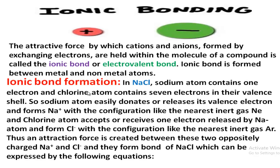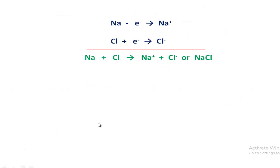Now follow the ionic bond formation. For example, in sodium chloride: sodium atom contains one electron and chlorine atom contains seven electrons in their valence shell. Sodium atom easily donates or releases its valence electron and forms a sodium ion — that is, a cation — with the configuration like the nearest inert gas neon. Chlorine atom accepts or receives one electron released by sodium atom and forms chloride ion with the configuration like the nearest inert gas argon. Thus an attraction force is created between these two oppositely charged sodium ion and chloride ion, and they form the bond of sodium chloride.